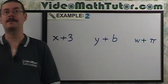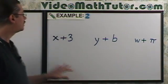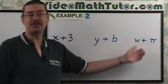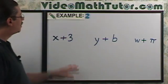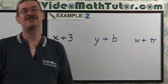A constant being added to a variable is traditionally written to the right of the variable. Here are some examples. The x, the y, and the w are the variables. The 3, b, and pi represent the constants.